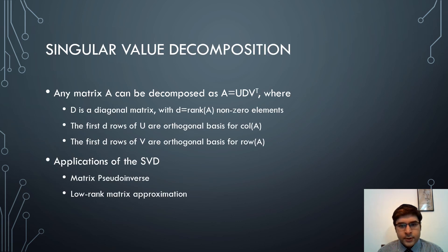Now we shall see what is singular value decomposition. Any matrix A can be decomposed as A = UDV^T, where D is a diagonal matrix with D equal to the rank of A non-zero elements. The first D rows of U are an orthogonal basis for the column space of A, and the first D rows of V are an orthogonal basis for the row space of A. Applications include finding the matrix pseudo-inverse and lower rank matrix approximation.